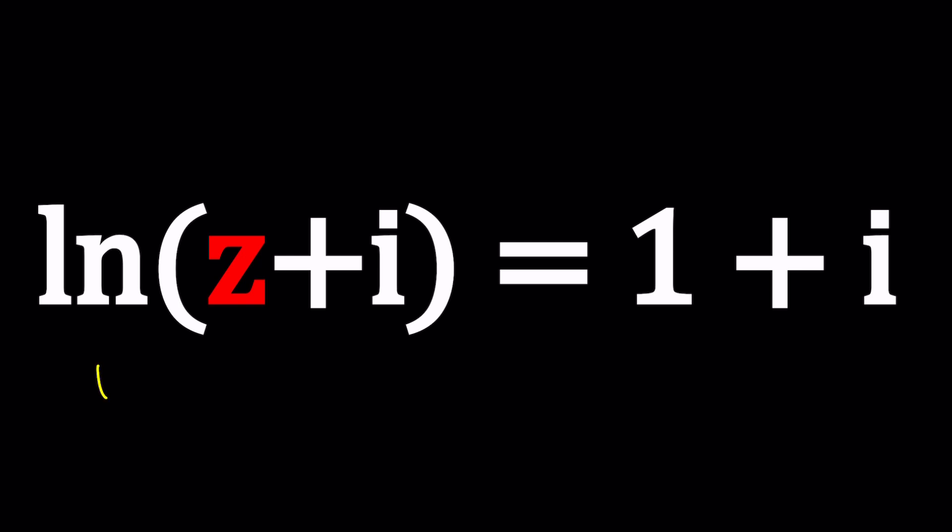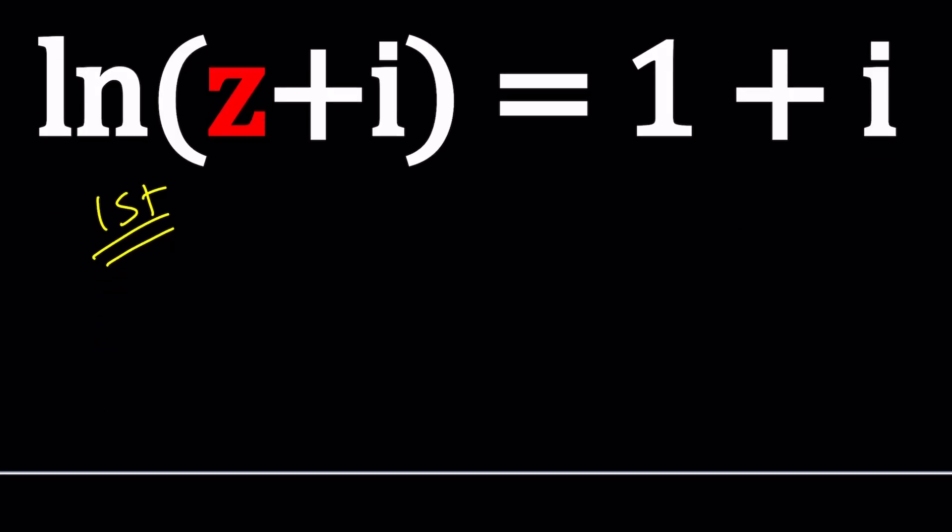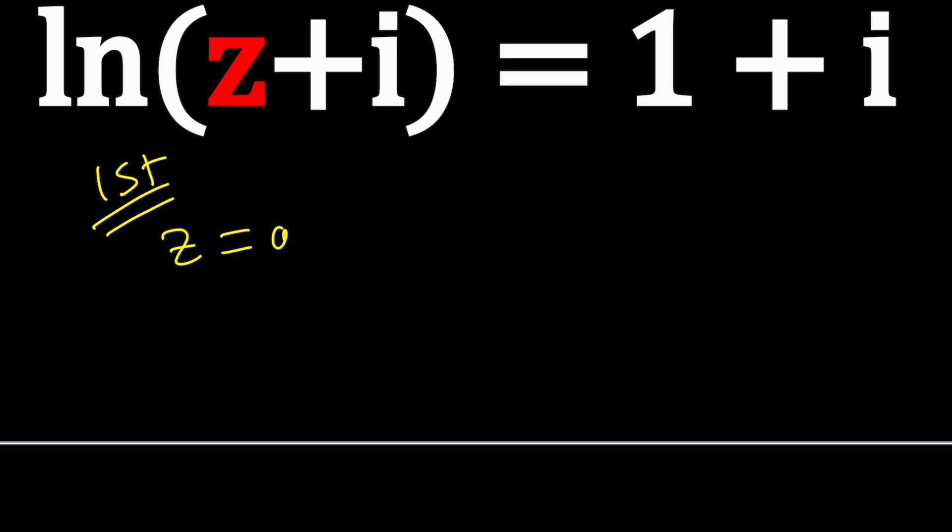For our first method we're going to go ahead and set z equal to a plus bi for two reasons. One, this solves the problem. Two, it's the name of this channel. Isn't that cool? A plus bi. So hopefully you'll remember that.